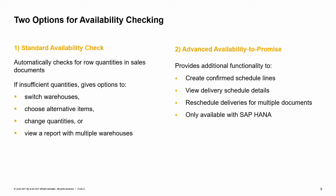The second option, the advanced availability to promise, provides additional functionality to create confirmed schedule lines with delivery dates for items checked and the ability to view schedule details for those items. If needed, you can reschedule deliveries for multiple documents. This option is only available if you are running on an SAP HANA database.